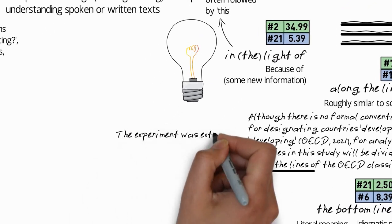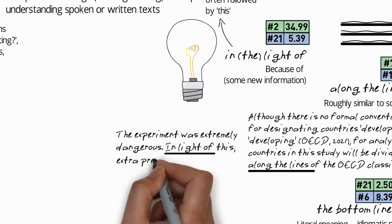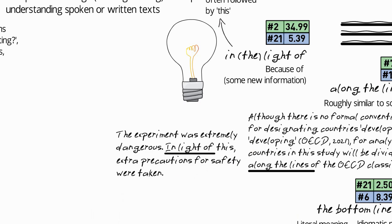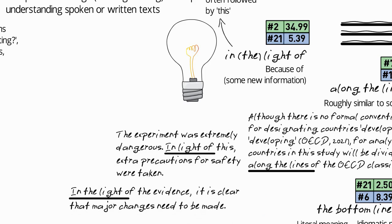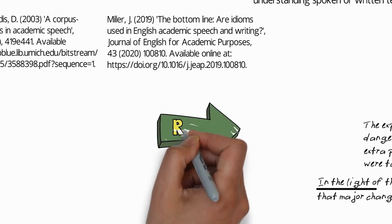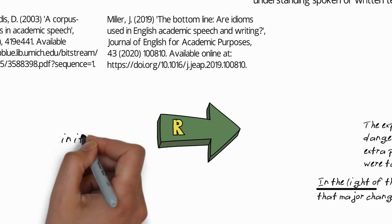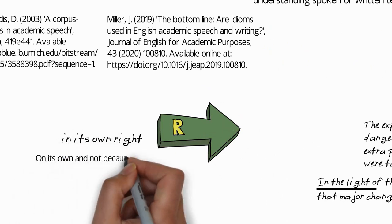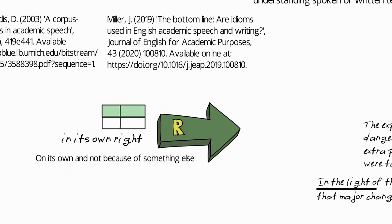For example, the experiment was extremely dangerous. In light of this, extra precautions for safety were taken. Another example: in light of the evidence, it is clear that major changes need to be made. Next, in its own right, which means on its own and not because of something else. Again, this is a common idiom in academic writing, more common in writing than speaking.